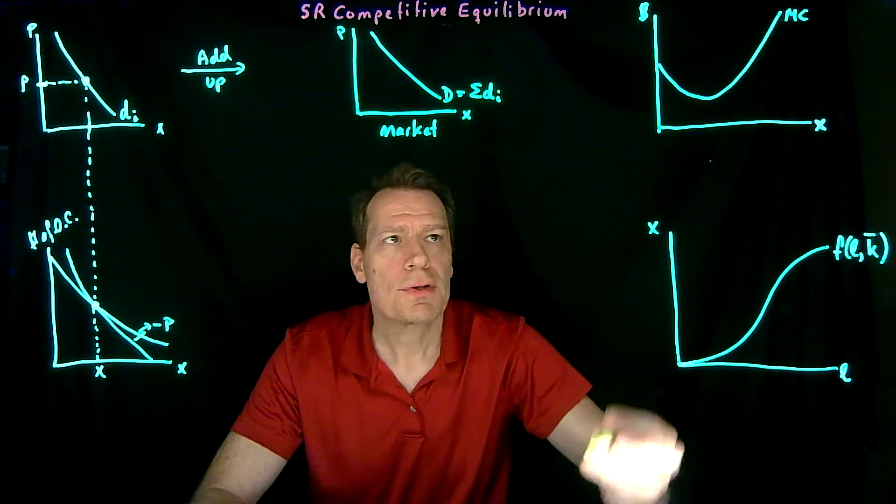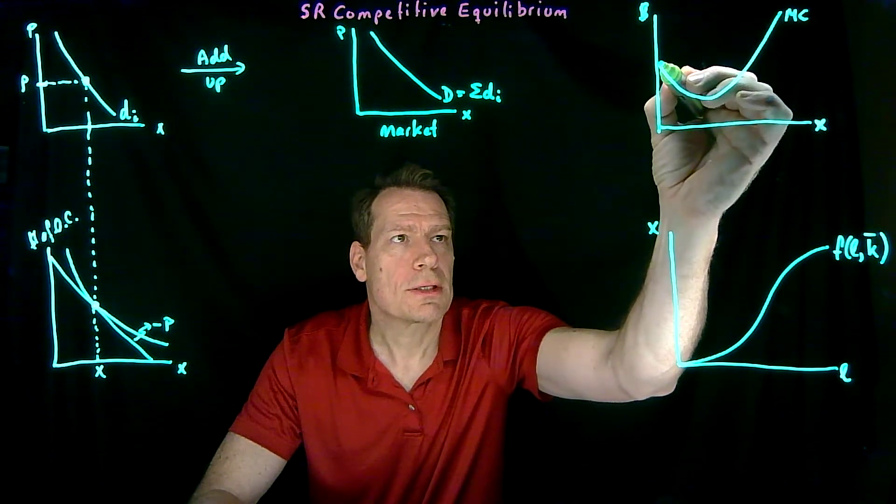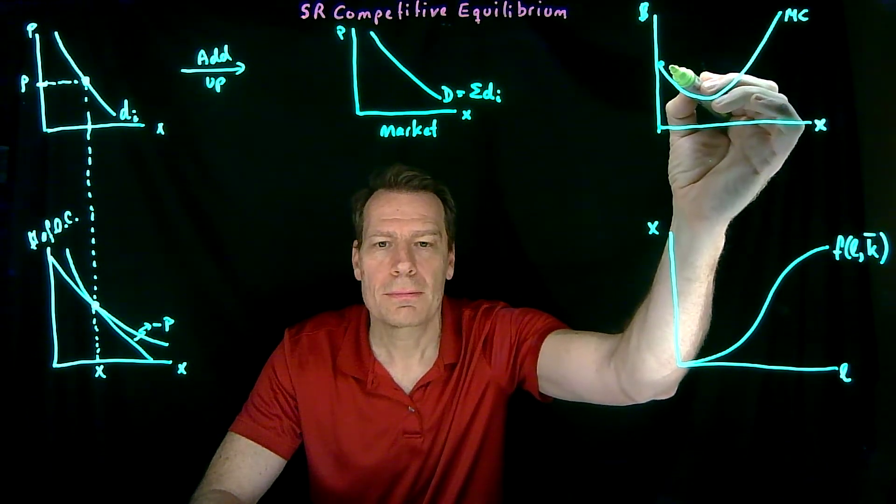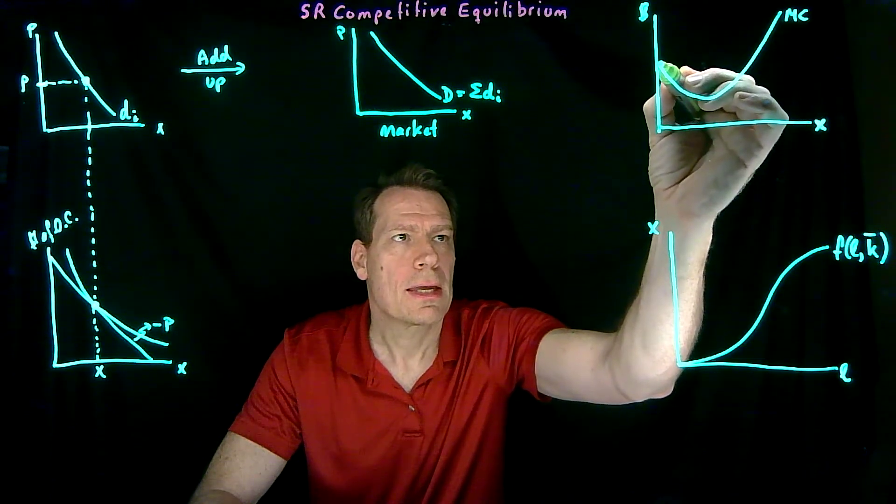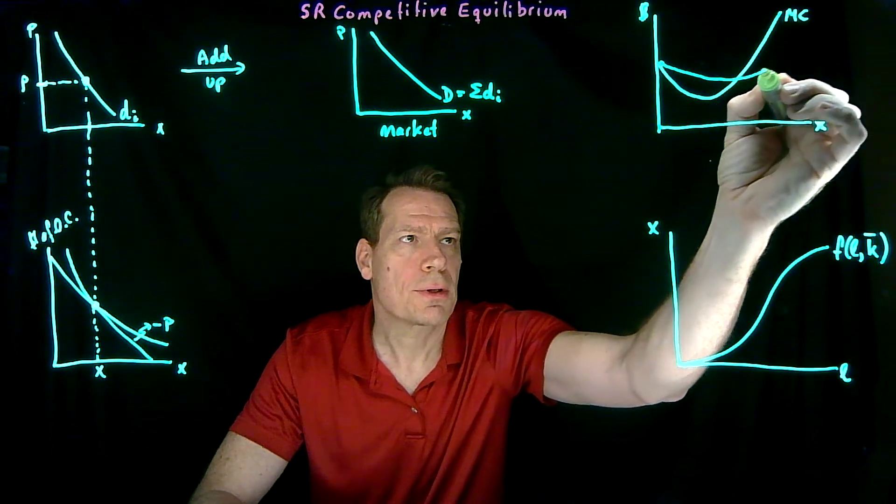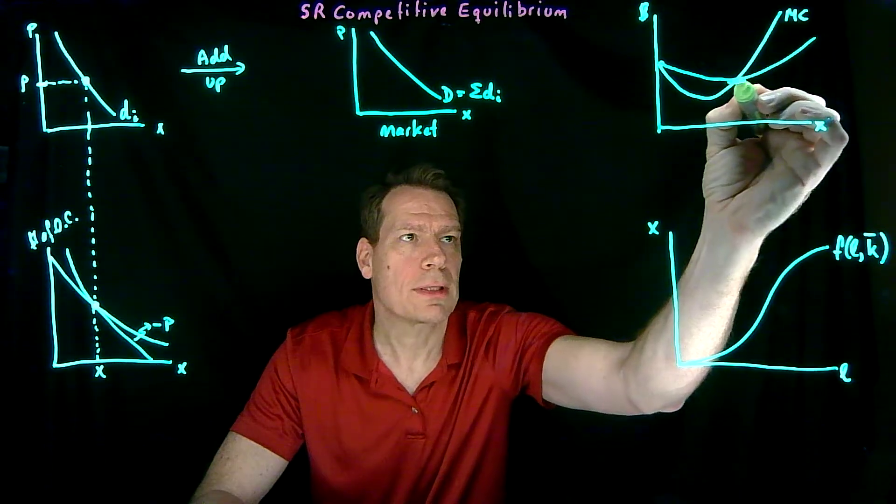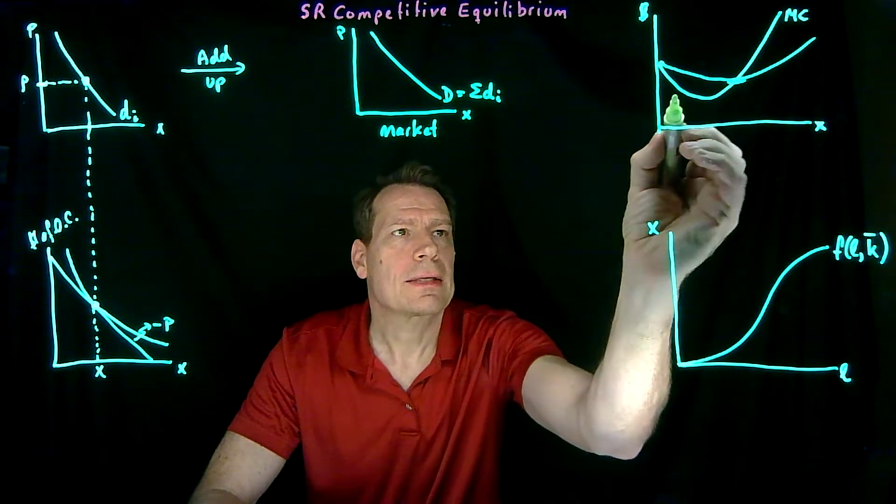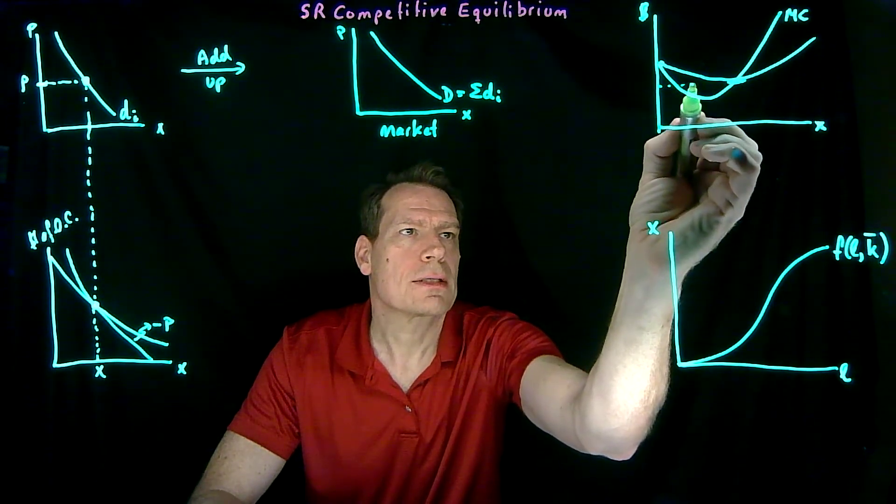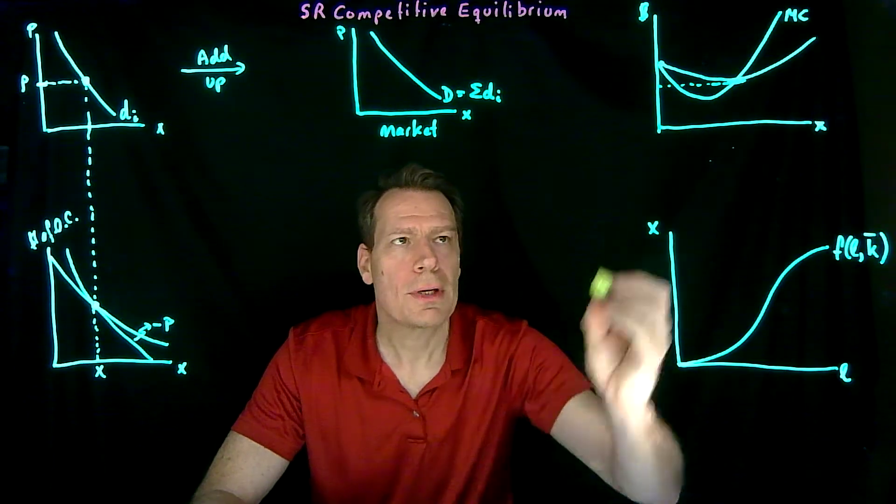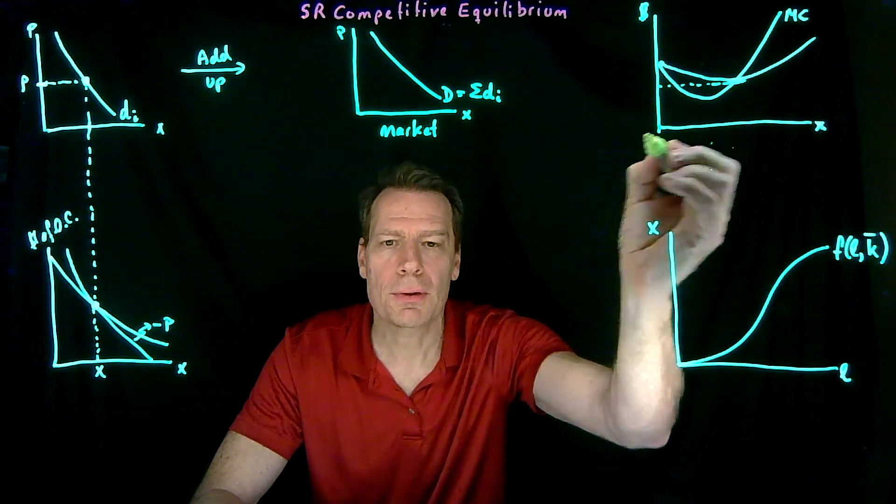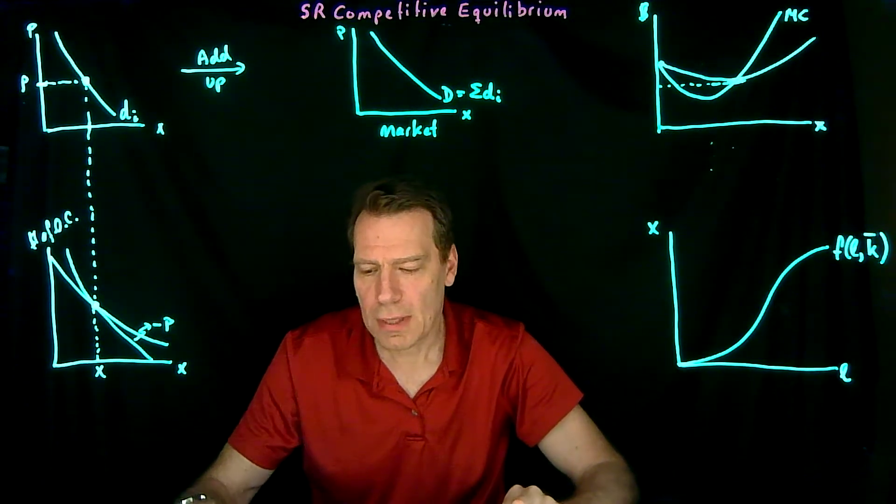Then we found that there's an average cost curve that starts at this point, because there are no fixed costs in the short run, and crosses the marginal cost at its lowest point. That gave us the firm's shutdown price. And we knew that below that, which we initially called the break-even price, the firm is not going to produce.